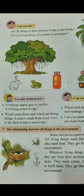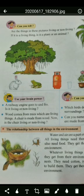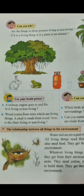Next, wood comes from trees, which are living things. A chair is made from wood — so is the chair living or non-living? Children, a chair is non-living. Trees are living things, but the wood which we get from trees comes in the group of non-living things.